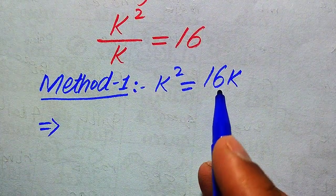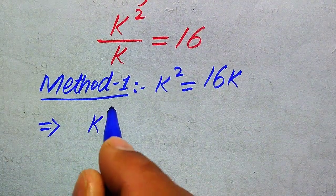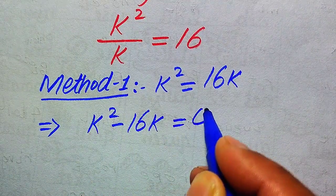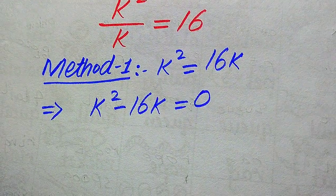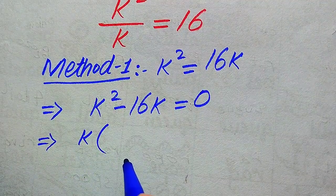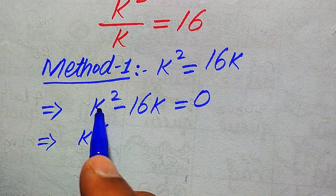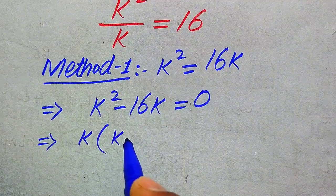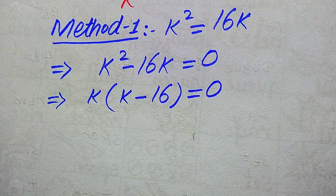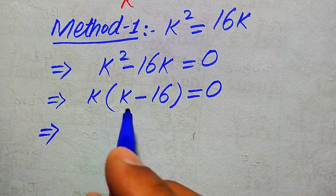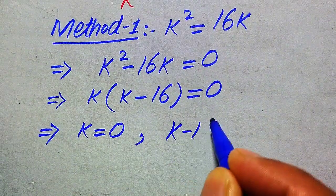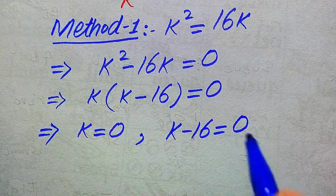Next, we move 16k from the right-hand side to the left-hand side, giving us k squared minus 16k equals 0. Both terms involve k, so we factor out k: k times (k minus 16) equals 0. This splits into two cases: k equals 0, and k minus 16 equals 0.